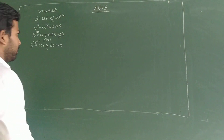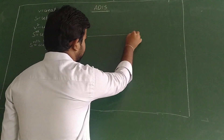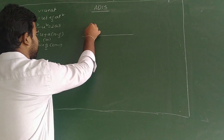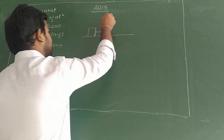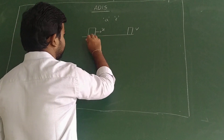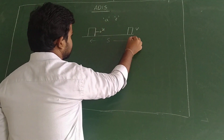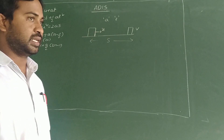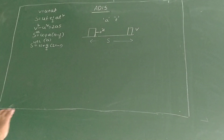Whenever an object is moving with uniform acceleration, we can use these four equations of motion. Let me take one diagram. For example, an object is moving with initial velocity u, with uniform acceleration a, and after some time t it acquires velocity v and covers some distance s.